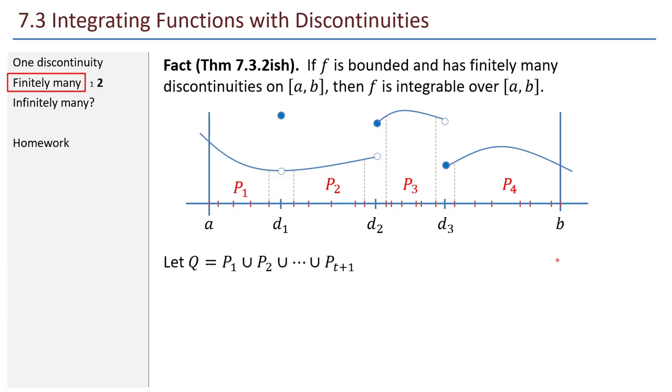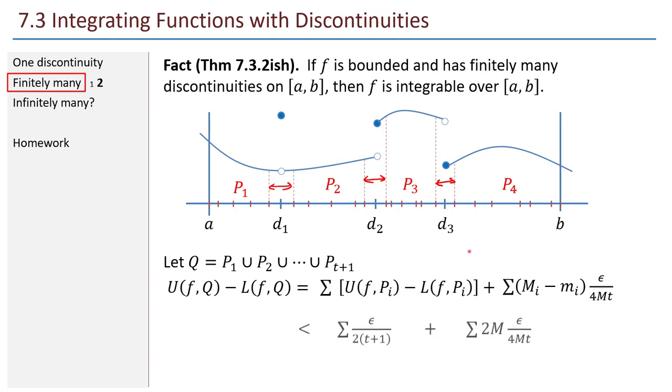Here is the partition that is going to bring it home for us. I'm going to make partition Q that is the union of all those p's that I described earlier. Let's figure out upper sum minus lower sum of partition Q. I claim that this is going to be less than epsilon. The upper sum minus the lower sum of that partition Q. First of all, I can take all the upper sums minus lower sums of the p_1, p_2, p_3, p_4. But I'm missing the sub-intervals over the discontinuities. So I also have to include the summation of max minus min over those t discontinuities. It's the difference in the heights times the interval width.